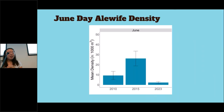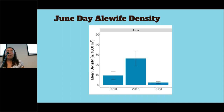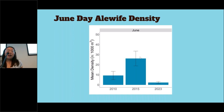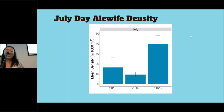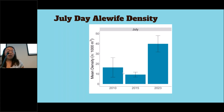Here are the June alewife density results compared to two other years: 2010, 2015, and 2023. The y-axis shows mean density in number of larvae per 1,000 meters cubed. During the June cruise we did not catch a lot of alewife — this could be due to a major upwelling in late June, and we were unable to get onto the lake due to weather conditions. In 2015 there was a large density of alewife. In the July cruise we found a lot of alewife; we don't know if these are ones that survived the upwelling or newly hatched larvae. In 2015, there were two major upwellings and alewife density decreased a lot.